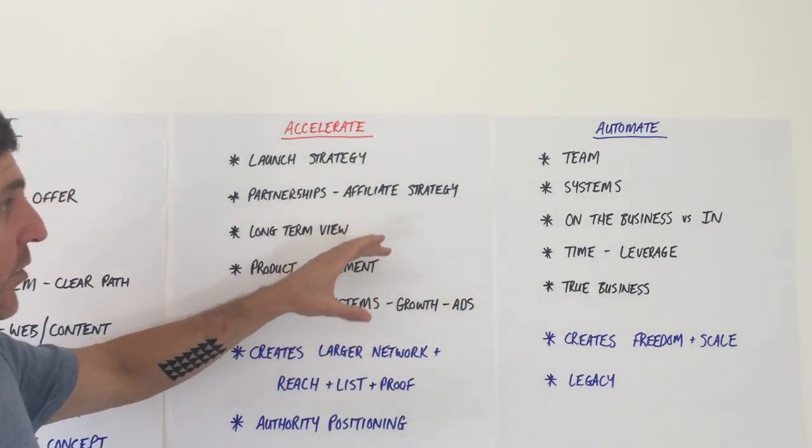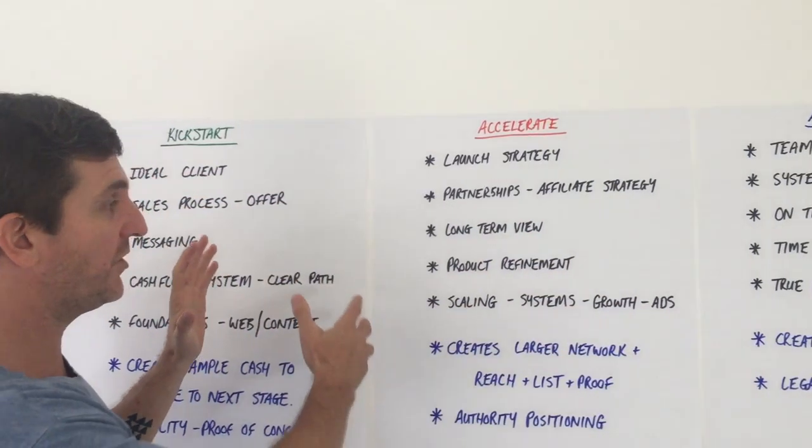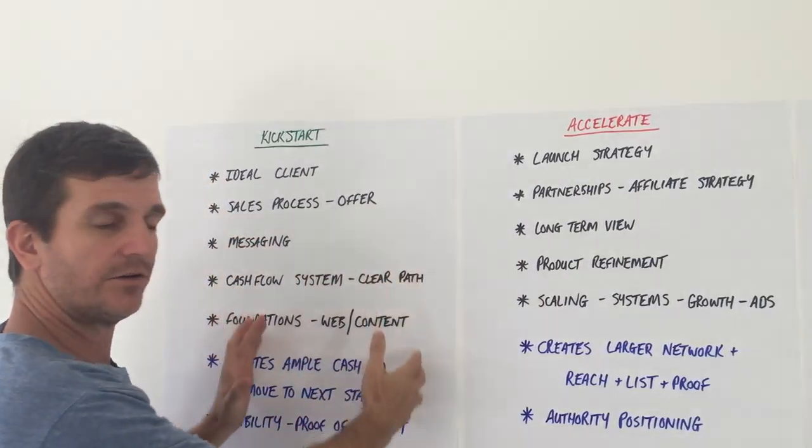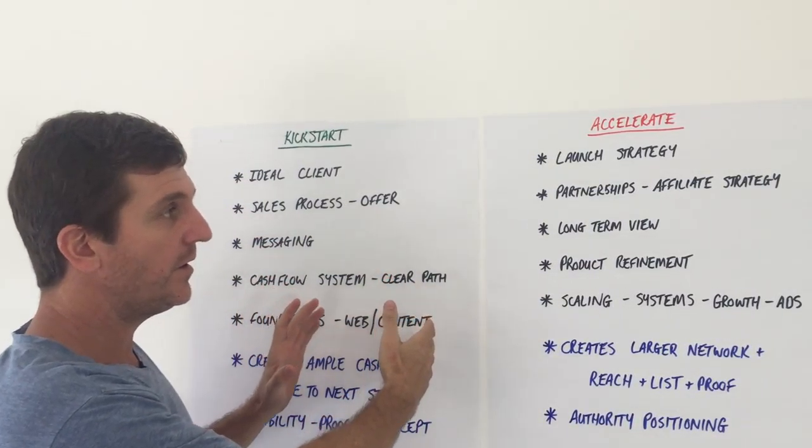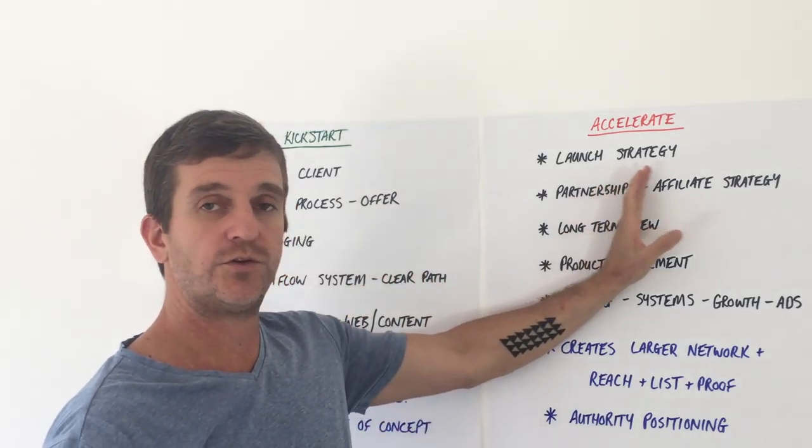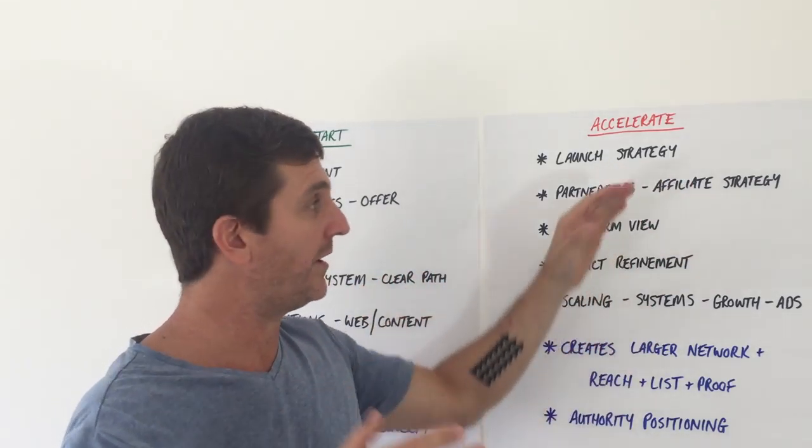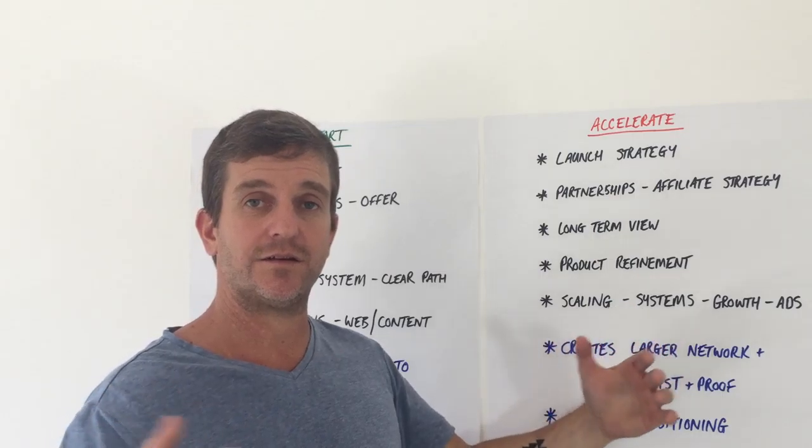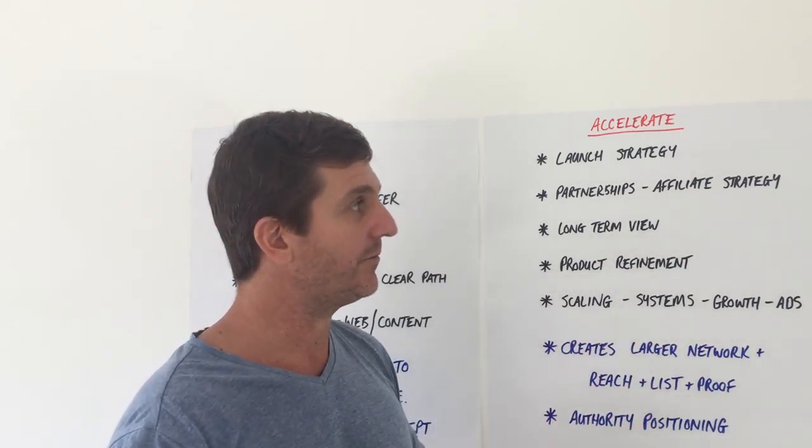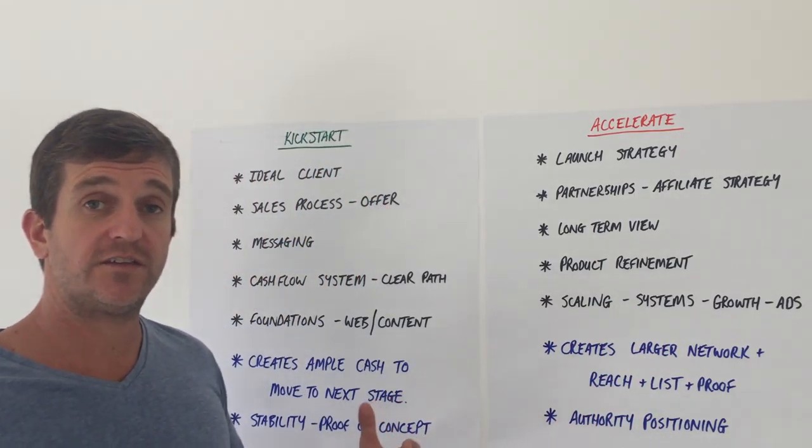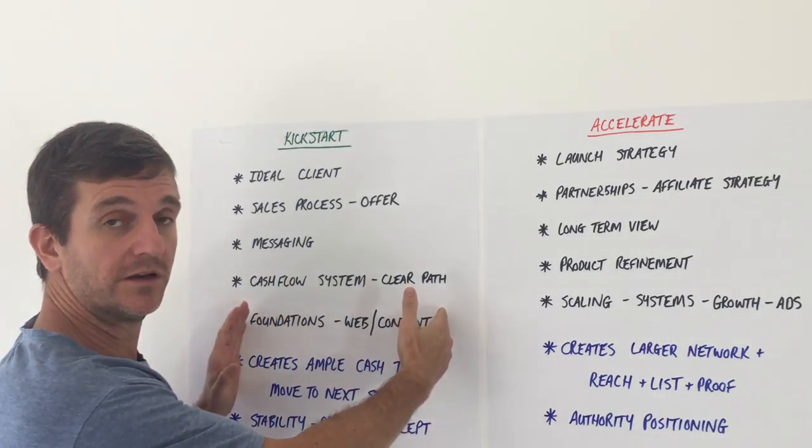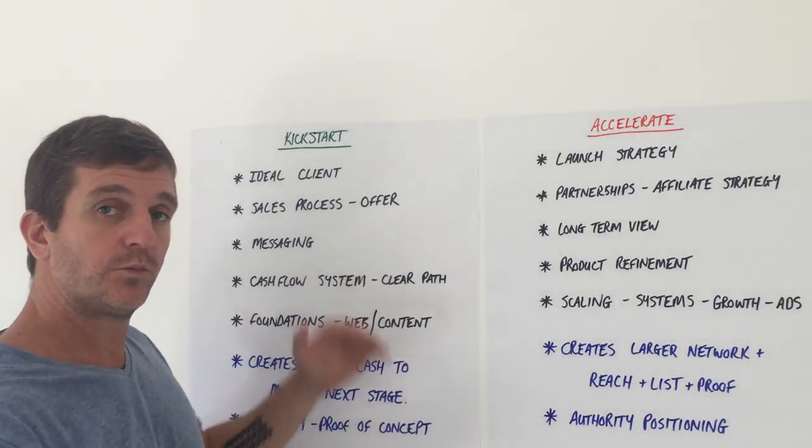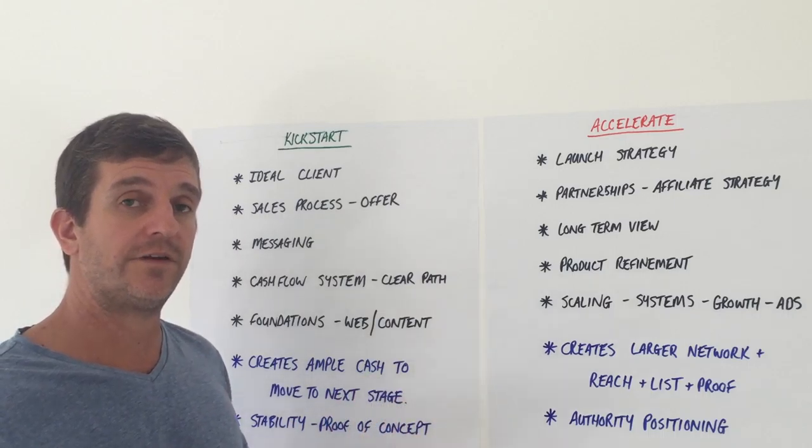Now the Queen could come to me in any of these positions, not usually the Kickstart - they normally have cash flow sorted, but they normally look for this launch strategy where they're able to multiply networks and their list and growth really quickly. Someone like a Princess that is struggling to start will come to me and look for the Kickstart phase where we'll generate cash flow and lay the foundations.